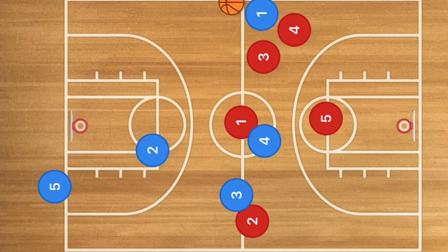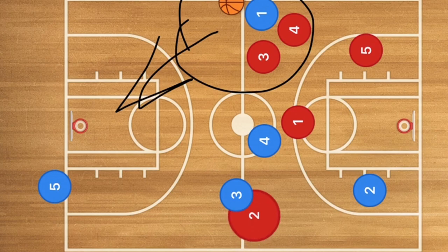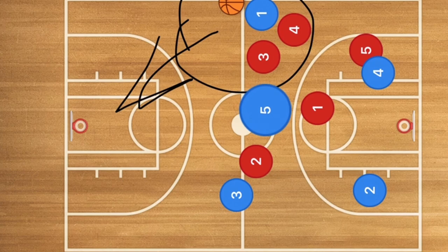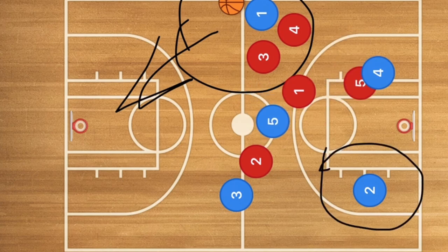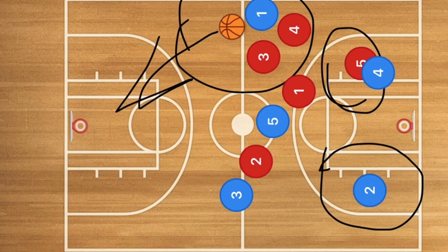Once forced to the sideline, the ball handler is trapped — he can't pass or dribble back over the court. If nobody is open for a pass, the offensive team has nothing. Even if a player is open way across the floor, player five can intercept that pass. That is why the trap defense is so effective.